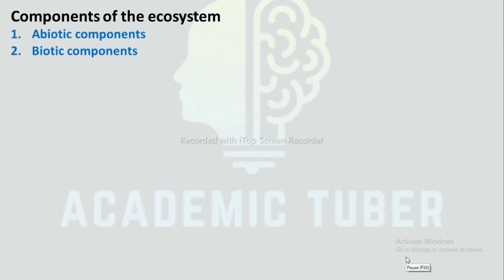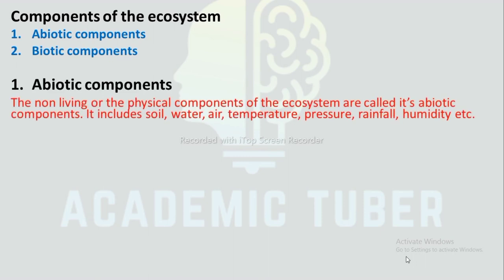Components of ecosystem: Ecosystem is composed of two components — biotic and abiotic components. Abiotic components: The non-living or physical components of the ecosystem are called its abiotic components. It includes soil, water, air, temperature, pressure, rainfall, humidity, etc.